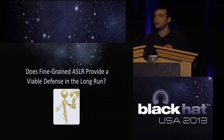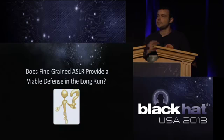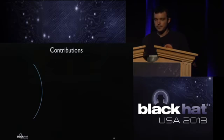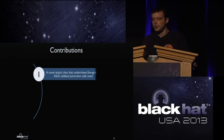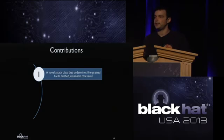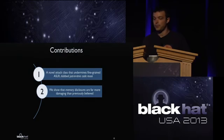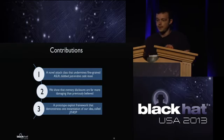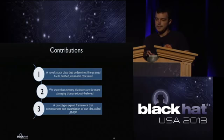The main question we tried to answer is whether fine-grained ASLR actually provides any benefit over standard ASLR, and if it will provide a viable defense long-term. Our contributions: first, we developed a novel attack class that undermines fine-grained ASLR, dubbed just-in-time code reuse. Second, we show that memory disclosures are far more damaging than previously believed. Finally, we developed a prototype exploit framework demonstrating one instantiation of our idea — since it is based on return-oriented programming, we call it JIT-ROP.